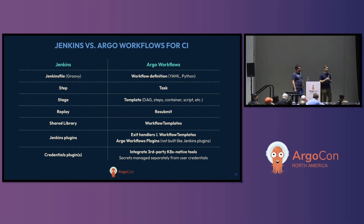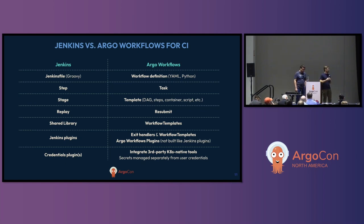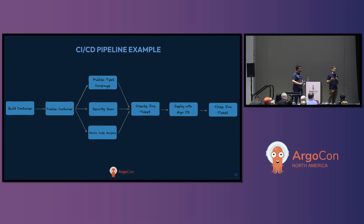The shared library in Jenkins maps well to what's called the workflow template in Argo workflows — a concept we use to better parameterize and remix our pipelines. With Jenkins plugins, there's not really a one-to-one mapping. There are Argo workflows plugins to be aware of, but they're not built like Jenkins plugins. There are exit handlers we use to integrate with third-party tools, and workflow templates can replicate a lot of what Jenkins plugin functions were doing, with us maintaining them ourselves.